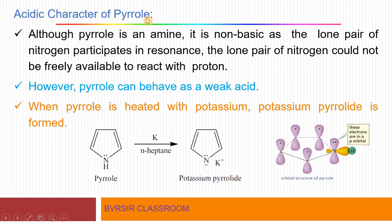Now a brief idea about the acidic character of pyrrole. Actually, pyrrole is an amine, so it should behave as a base since nitrogen has a lone pair of electrons. However, as mentioned in the first video, those lone pair electrons are involved in the aromatic sextet — the electronic structure — and so they are not available for bonding. Therefore, pyrrole acts as a non-basic substance. Although pyrrole is an amine, it is non-basic because the lone pair of nitrogen participates in resonance.